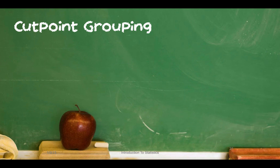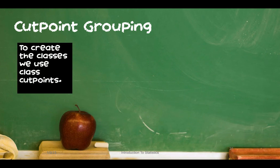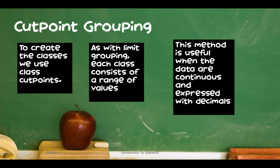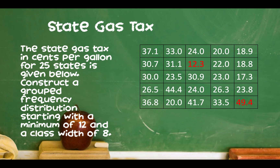Finally, we have cut point grouping. Here we create classes using things called cut points, and just like with limit grouping, each class consists of a range of values. This method is primarily used when the data is continuous or when you see decimal-valued data. Here we have a dataset of 25 randomly selected states and the gas tax per gallon of gasoline in each state.